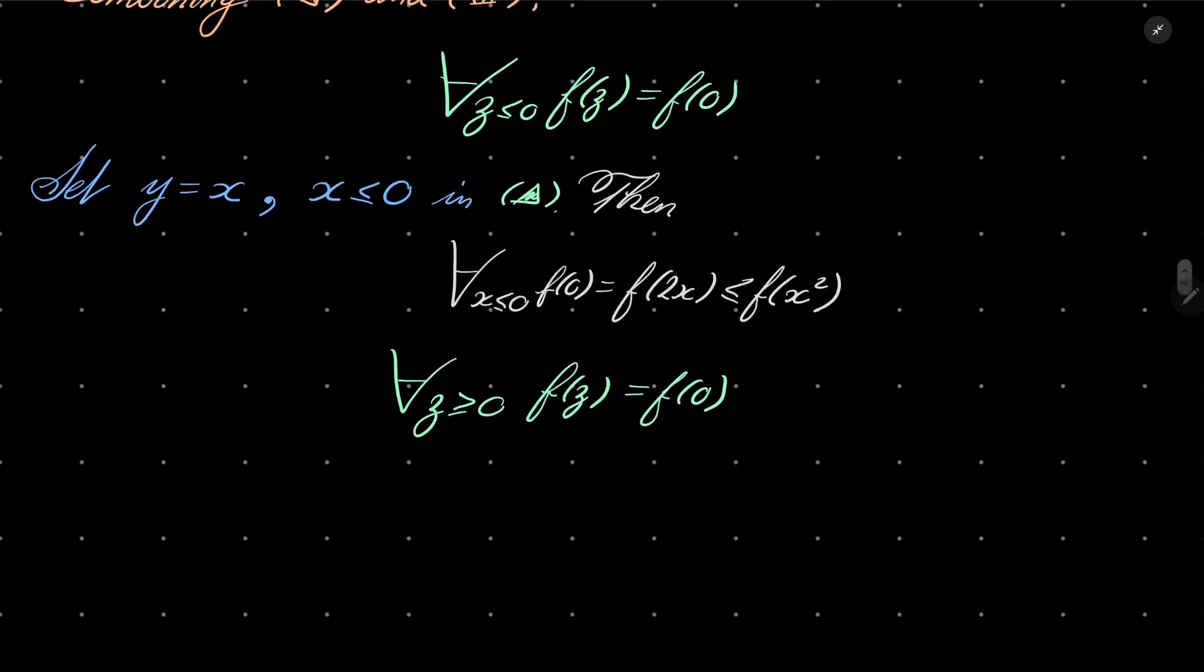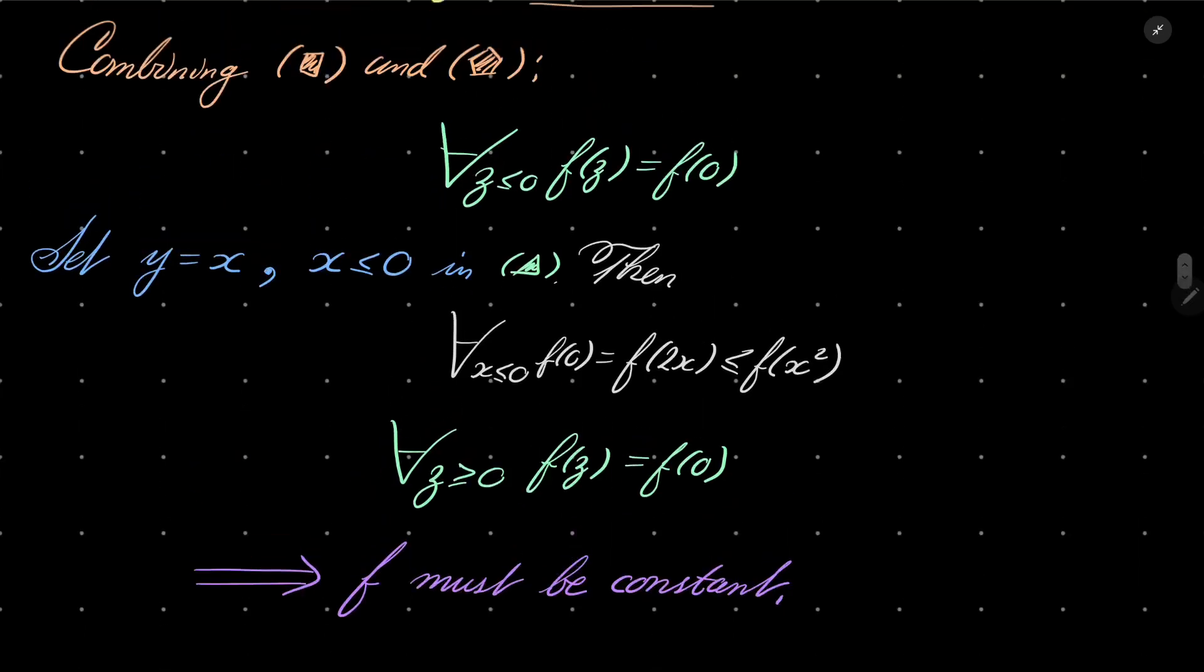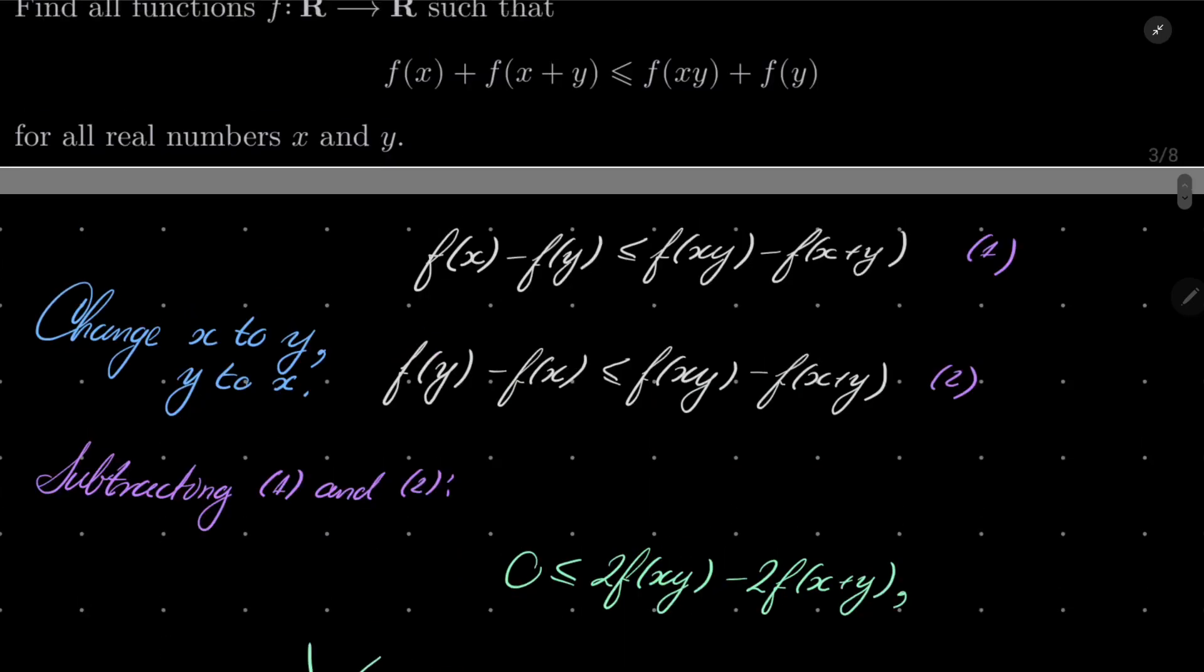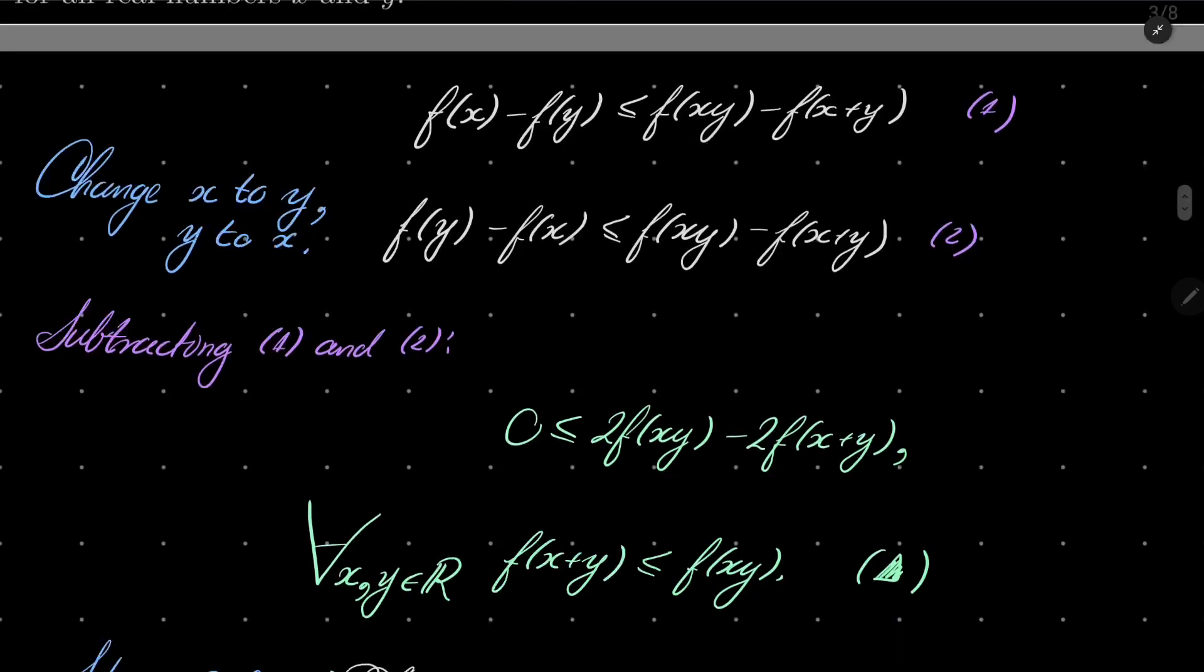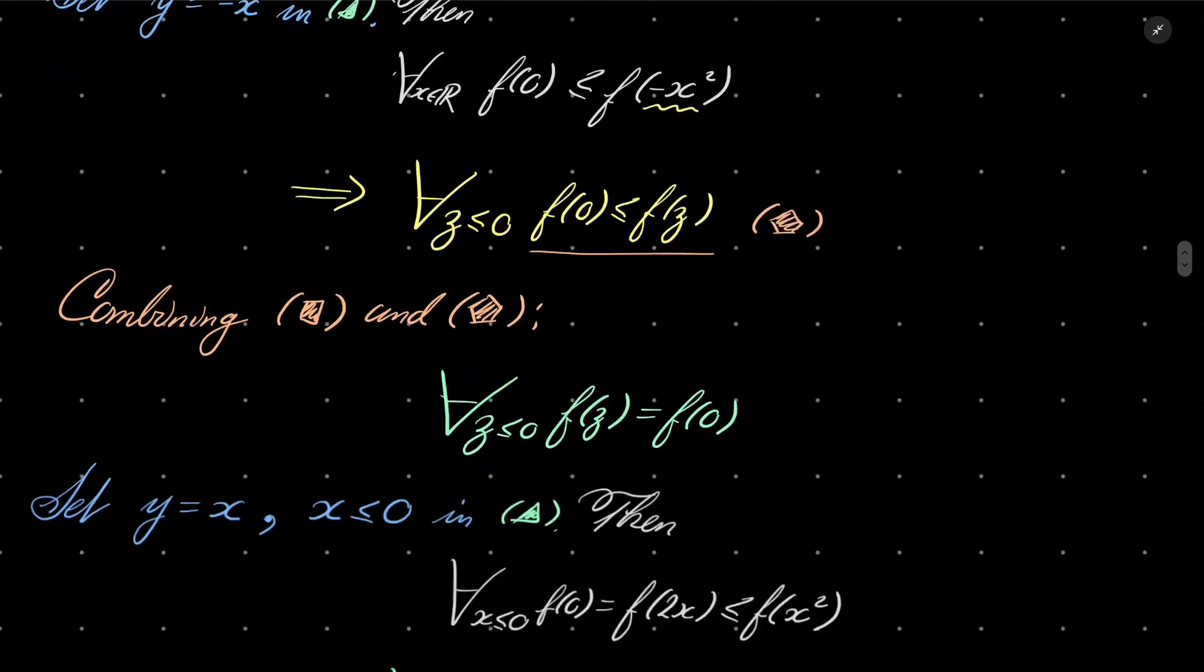So our function, in other words, is constant. Yes, f must be constant. Okay, and let's do a verification. If our function is constant, here we have constant plus constant, two times constant. Here we have constant, constant, two times constant. It is satisfied. So in other words, every constant function satisfies our inequality.